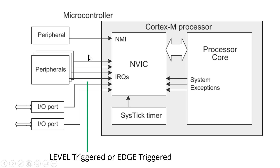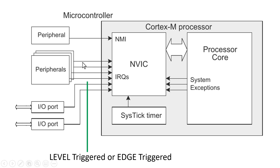Let us take the case where the line is a logic 0 triggered interrupt. In that case, the usual level on the line will be logic 1. But when the peripheral wants to give an interrupt to the processor, it will change the level of the line to logic 0. When this logic 0 is detected by the interrupt controller, the processor will serve this interrupt. The most special thing about level triggered interrupt is that the peripheral has to maintain the level at logic 0 on the interrupt line until the interrupt is served.